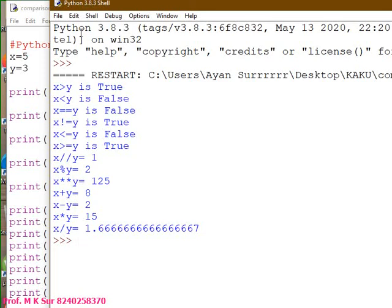And x mod y, the remainder came. And x star star y equals to 125 because 5 to the power 3, everyone knows, even children know.